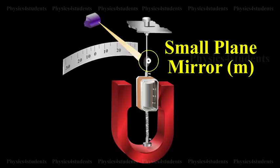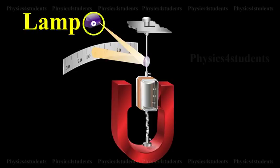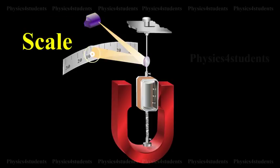A small plane mirror M attached to the suspension wire is used along with a lamp and a scale arrangement to measure the deflection of the coil.